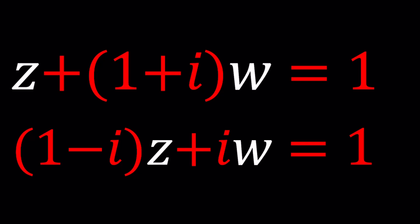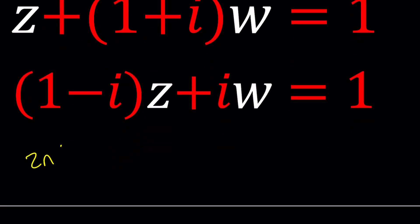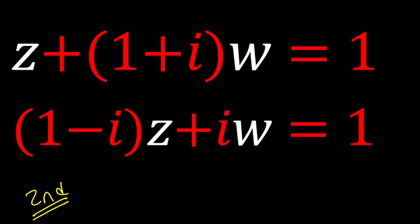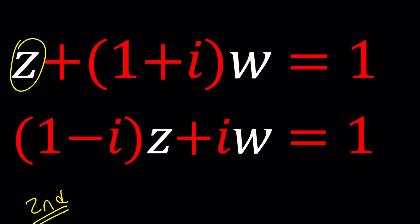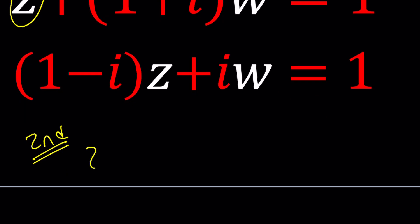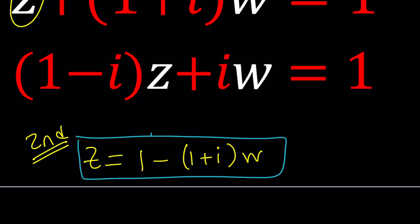Let me know how that goes if you ever try it. I'm going to start with the second method. I'm going to use substitution because substitution is awesome, and looking at these two equations, I noticed that Z is very easy to isolate from the first equation. Let's go ahead and do it.